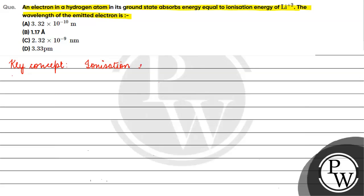Ionization energy is basically the amount of energy required to remove an electron. Ionization energy is 13.6 × Z² electron volts. If we talk about Li²⁺, the ionization energy is 13.6 × 3² = 13.6 × 9 = 122.4 electron volts.